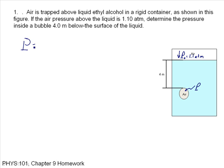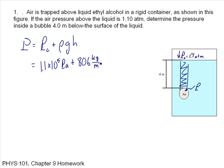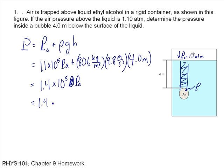If it's 4 meters below the surface of the liquid, we note that pressure is equal to p-naught plus rho gh. The pressure in this bubble is the pressure due to the weight of this column of liquid above it, plus the pressure that's pushing down onto the surface of the liquid, which is p-naught. So p-naught is 1.1 atmospheres, that's 1.1 times 10 to the fifth pascals, plus the density. The density of ethyl alcohol is 806 kilograms per cubic meter. The densities of liquids will be provided to you on the exam or quizzes. G, of course, is 9.8 and then times h, which is 4 meters, 4.0 meters. That gives me 1.4 times 10 to the fifth pascals, which is 1.4 atmospheres.